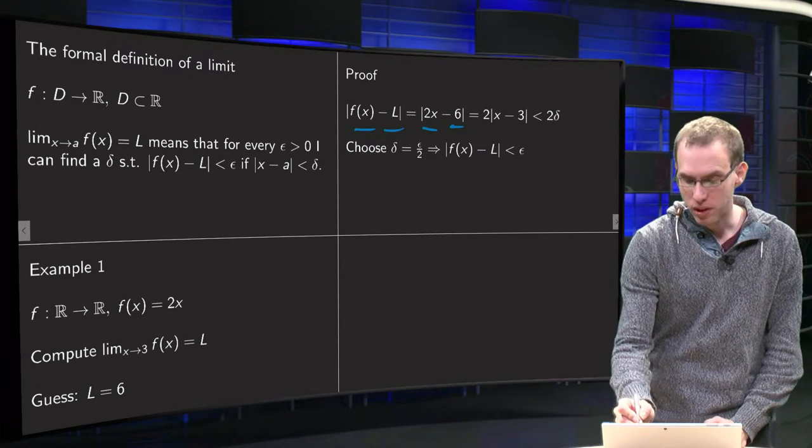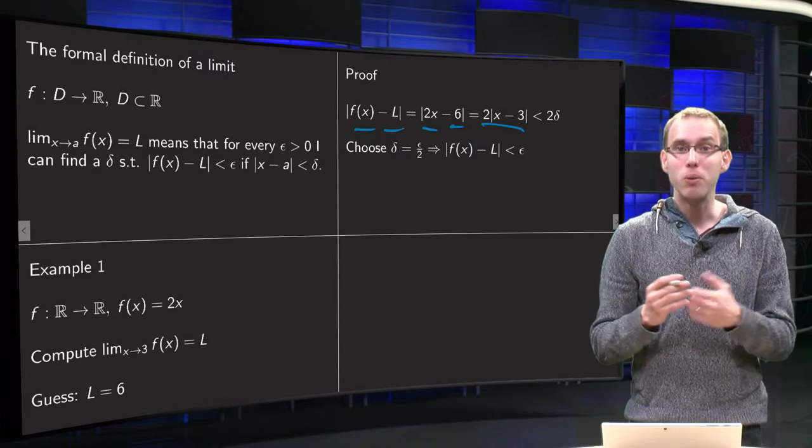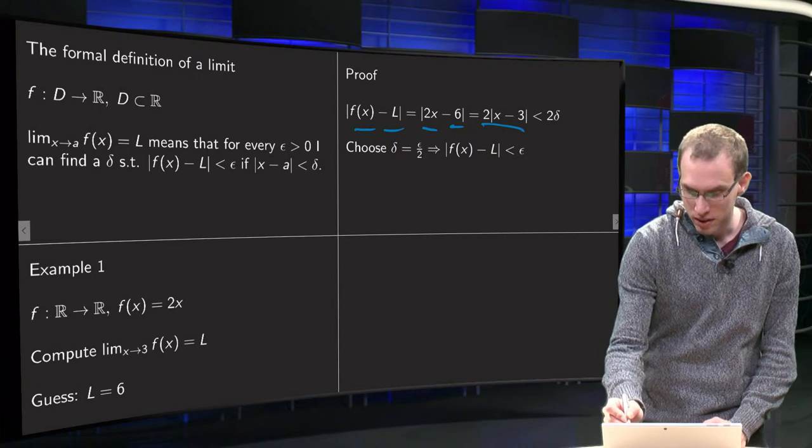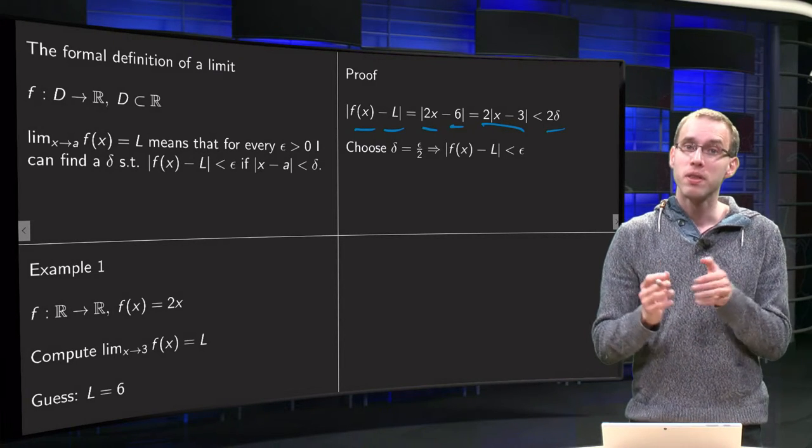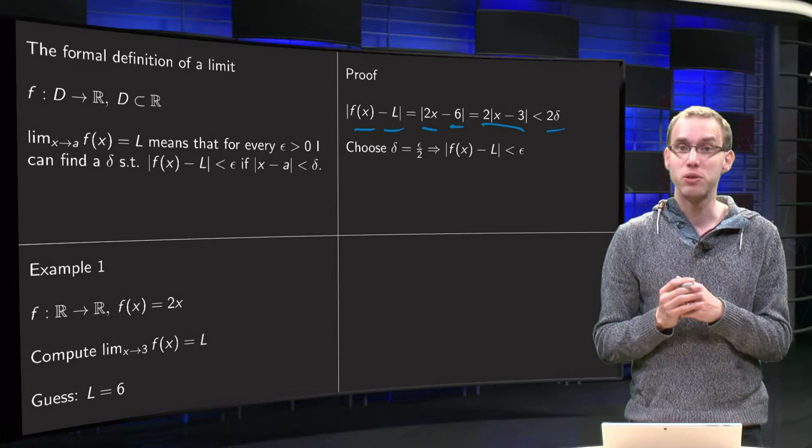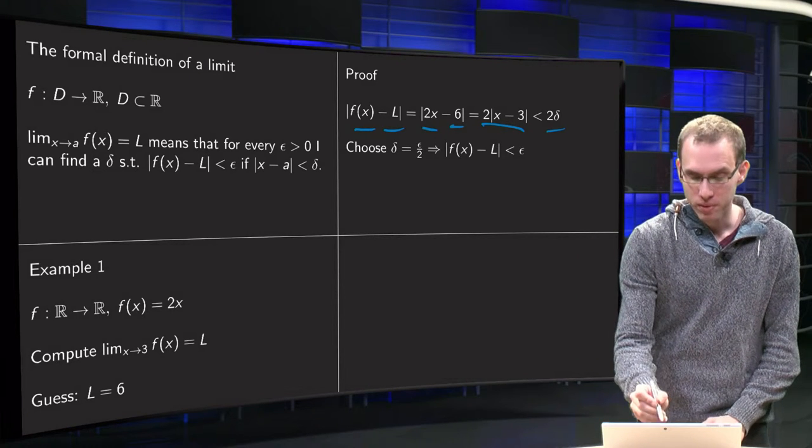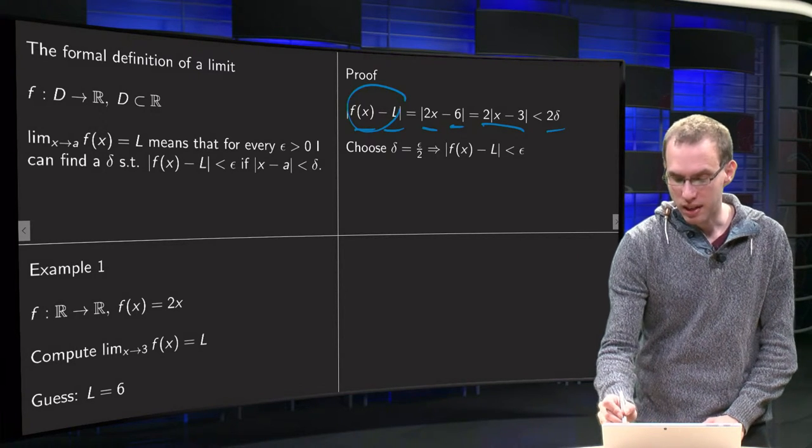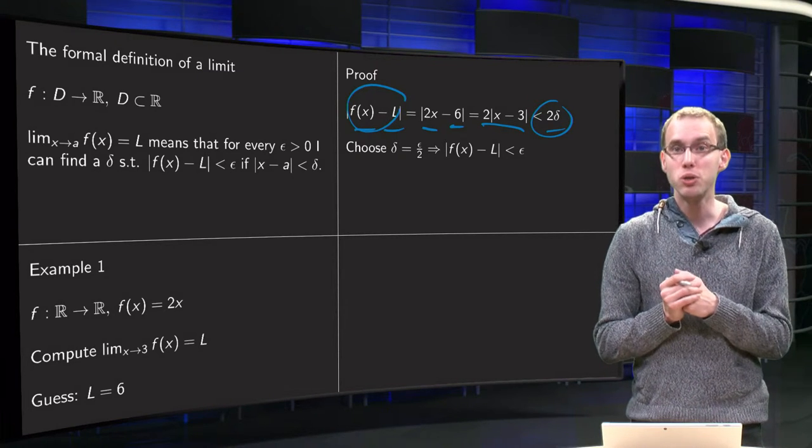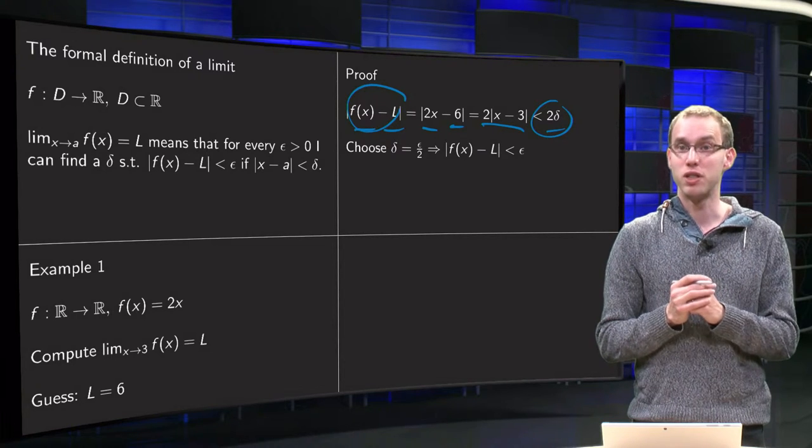Well, we can take out the 2, so that equals 2 times |x - 3|. And now we know that |x - 3| is smaller than delta. So we have 2 times |x - 3| is smaller than 2 times delta. And now we have to show that this quantity gets smaller than any epsilon. So how should we choose this quantity such that we have |f(x) - L| is smaller than epsilon?